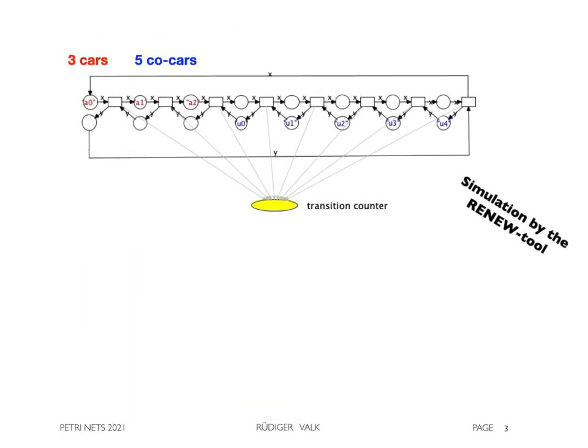Let us consider a colored net of a circular traffic queue with three cars and five co-cars. The following renew simulation stops when the initial state is reached for the first time.